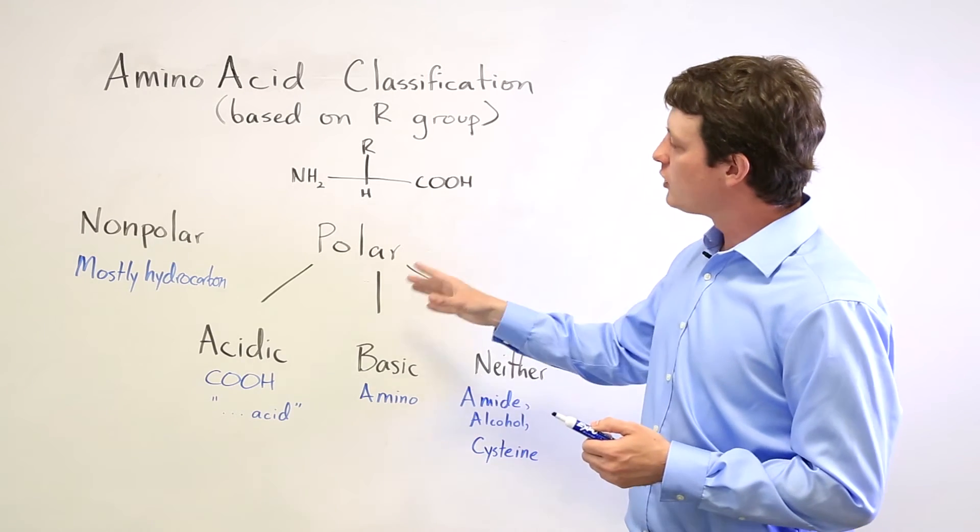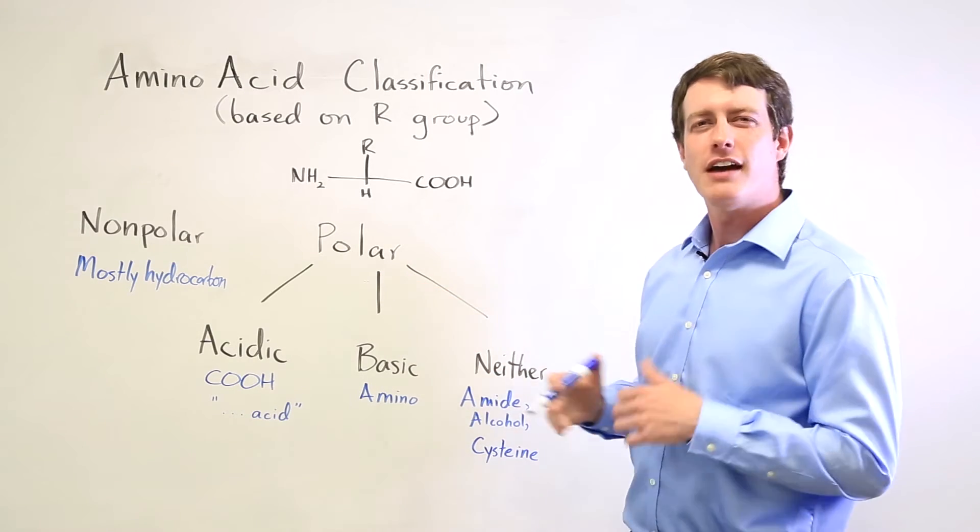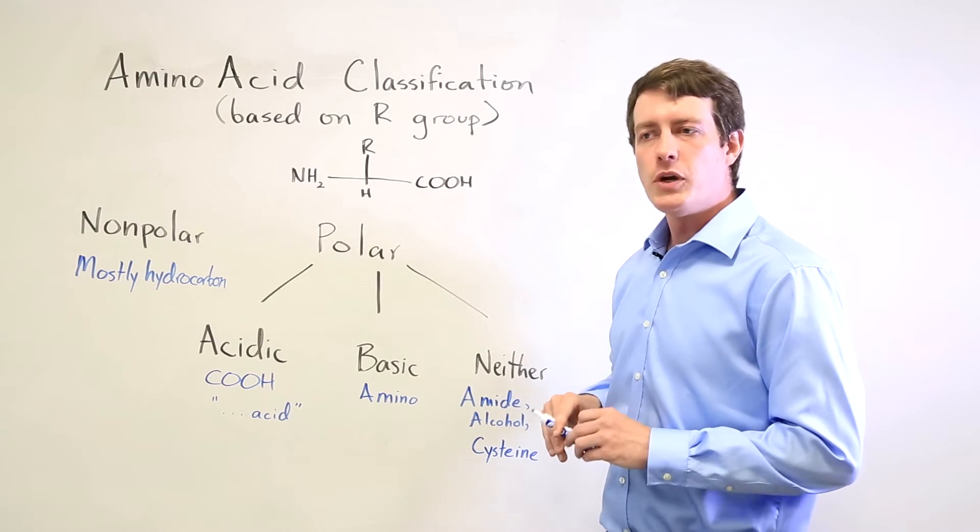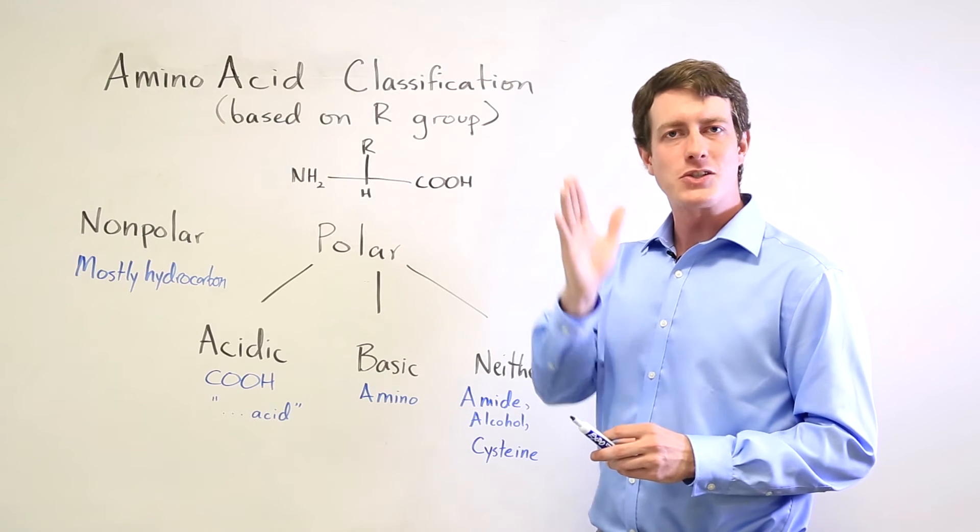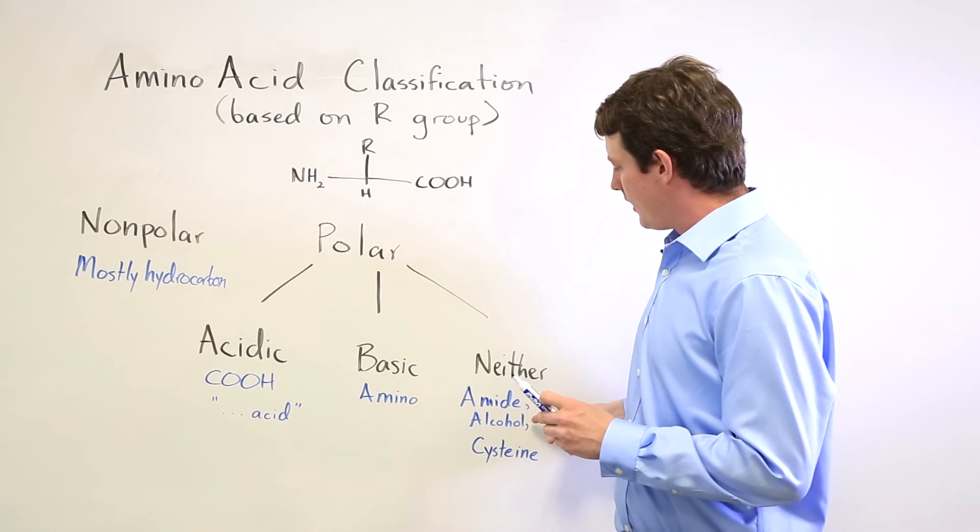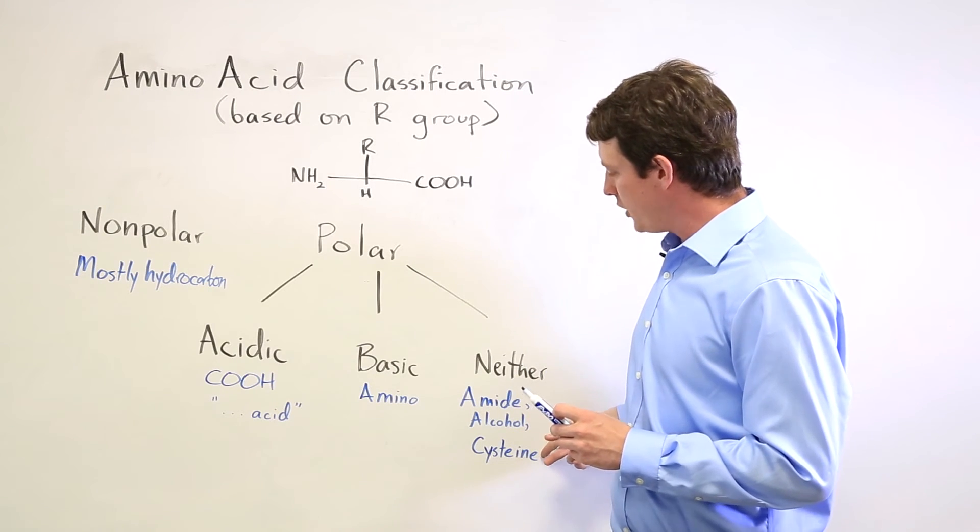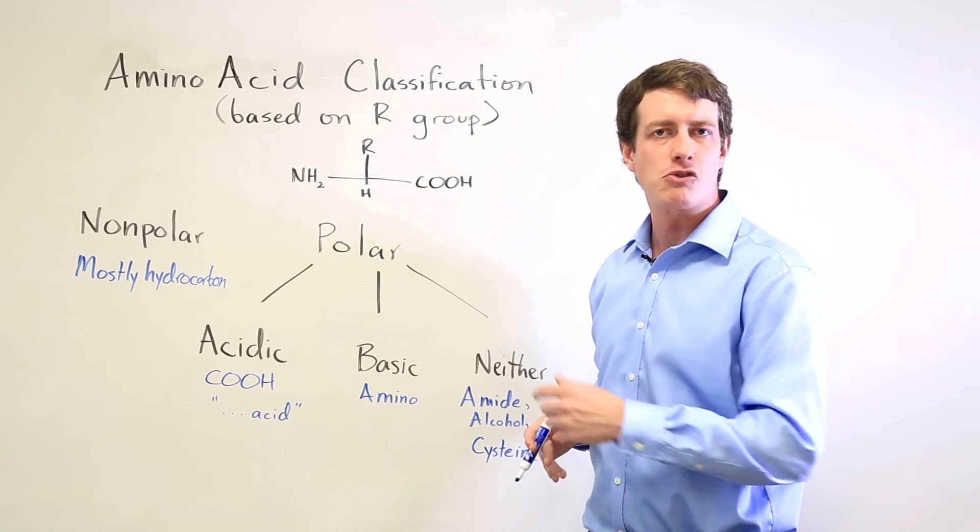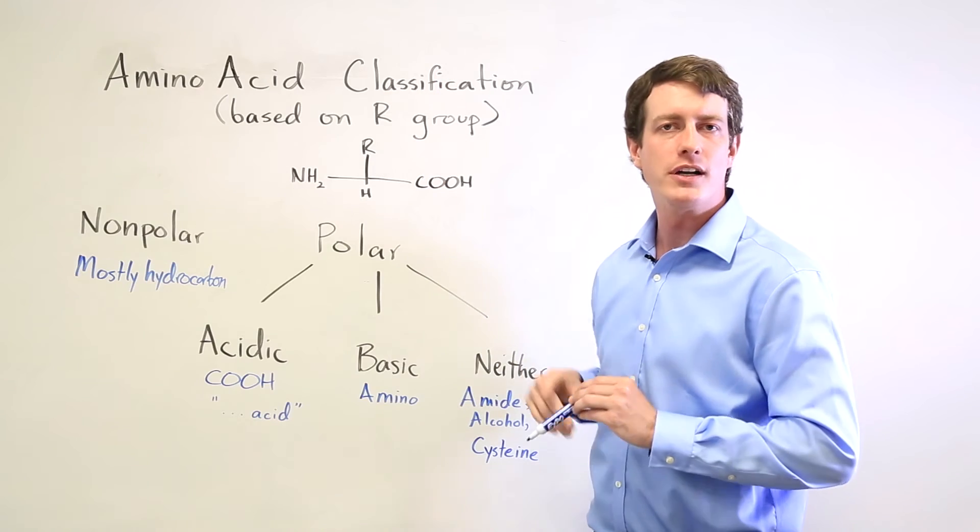And if it's polar but neither acidic nor basic, it could have any of several functional groups. It could have an amide functional group, which is an amino group directly next to a carbonyl group. You can have alcohol, or you can have cysteine, which is a particular one with an SH group at the terminal part of its side chain.